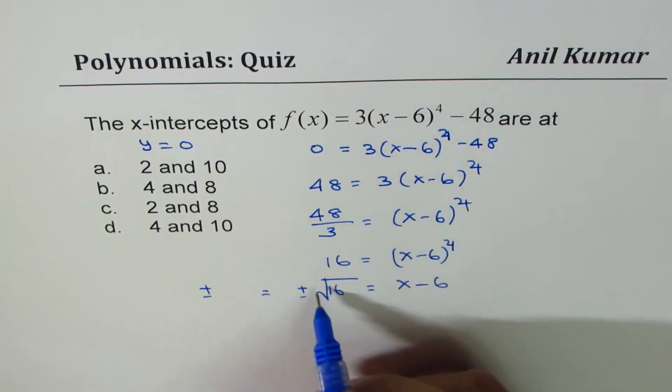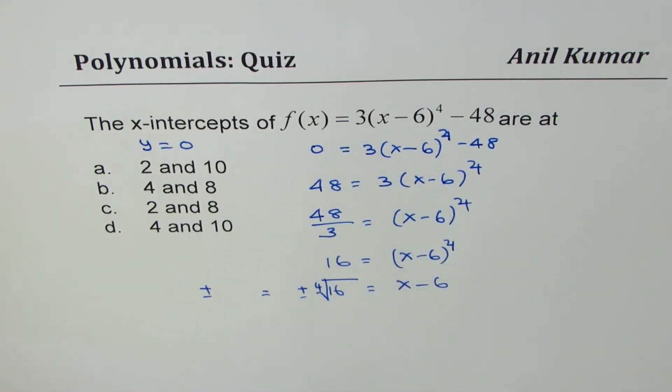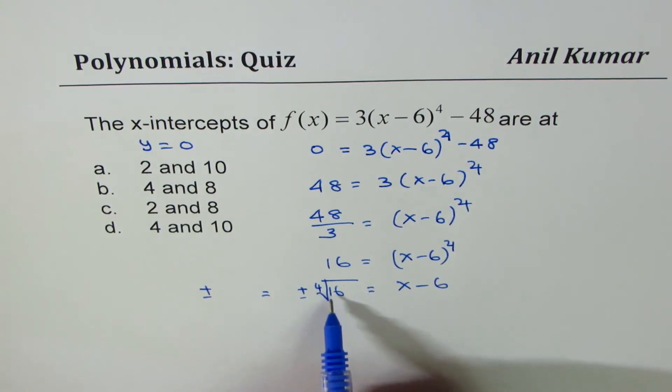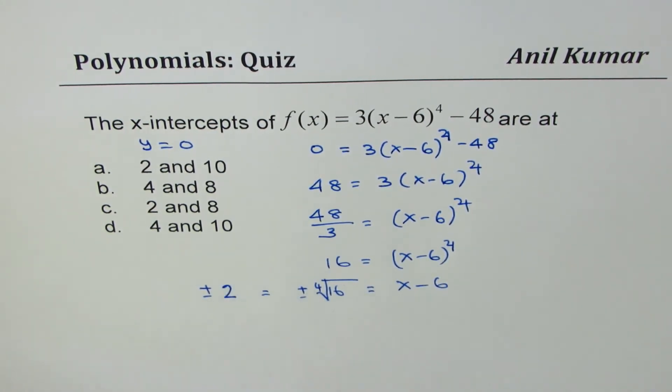This is degree 4 here. So we'll do the 4th root, correct? Not the square root. Now, what is the 4th root of 16? The 4th root of 16 is plus minus 2, right? So that is the 4th root of 16.